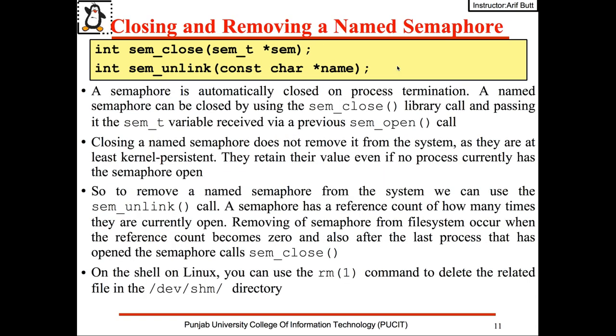Semaphores are normally closed automatically on process termination, but you can explicitly close a named semaphore using sem_close. Remember, closing a named semaphore does not remove it from the system as they are kernel persistent. To remove it you must use the sem_unlink call, passing the same name used in sem_open. On the shell you can also see and delete the files in the /dev/shm directory using the rm command.